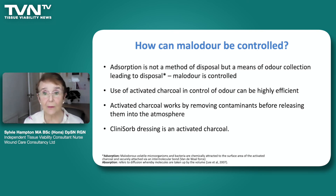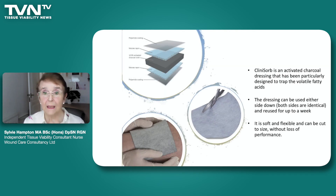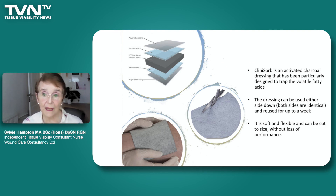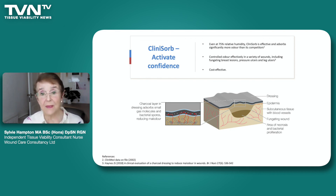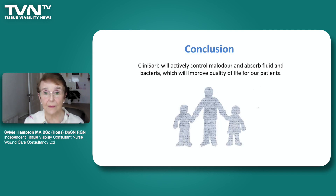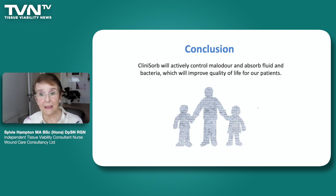Clinisorb dressing is an activated charcoal, which is exactly what we need in the case of malodour. You can see there are lots of layers as well as the activated charcoal cloth, and it's designed to trap the volatile fatty acids as well as soak up a lot of fluid. At 75% relative humidity it's still effective and adsorbs significantly more odour than its competitors. It is very cost effective and certainly worth consideration as part of our toolbox in wound care.